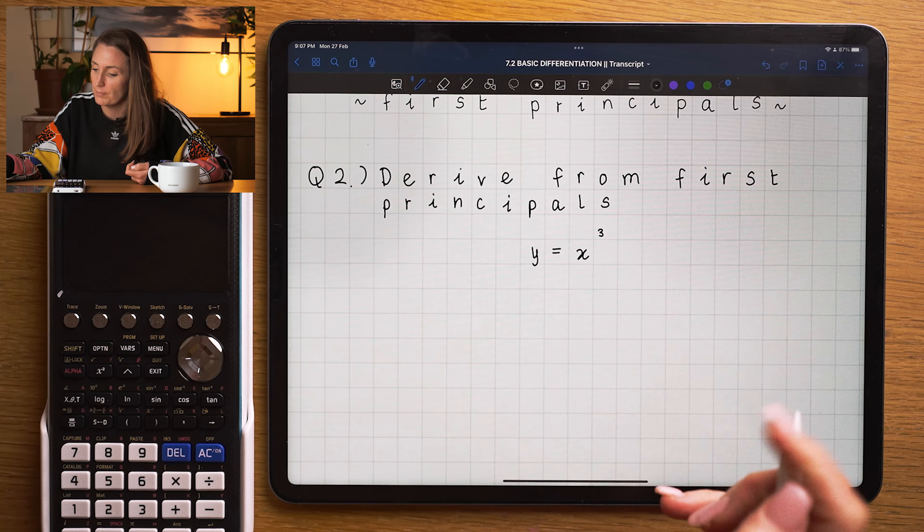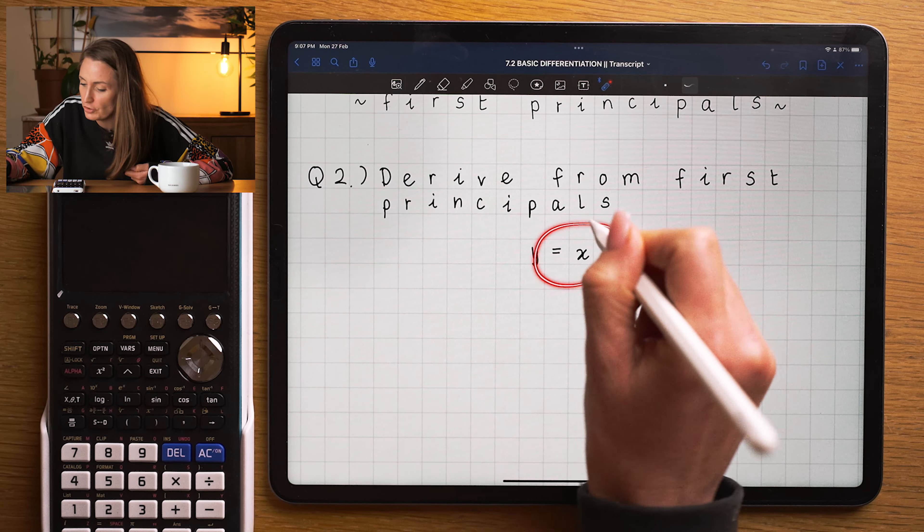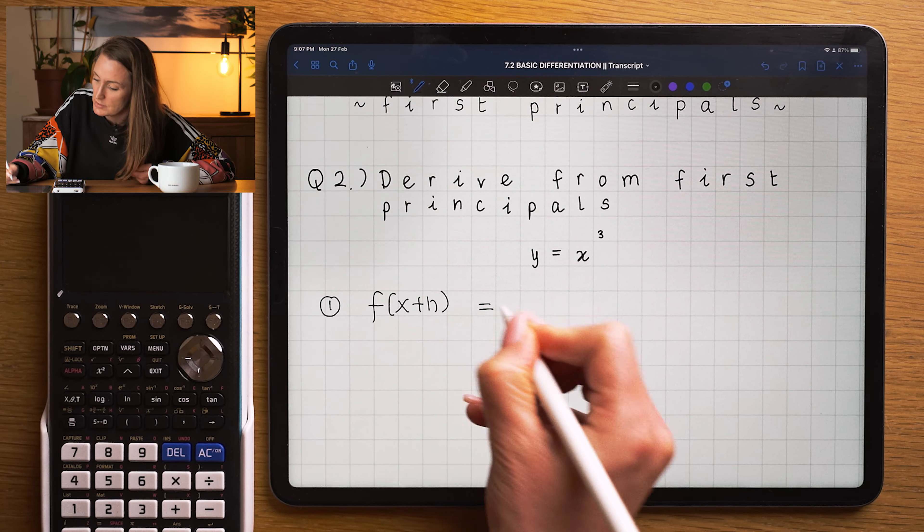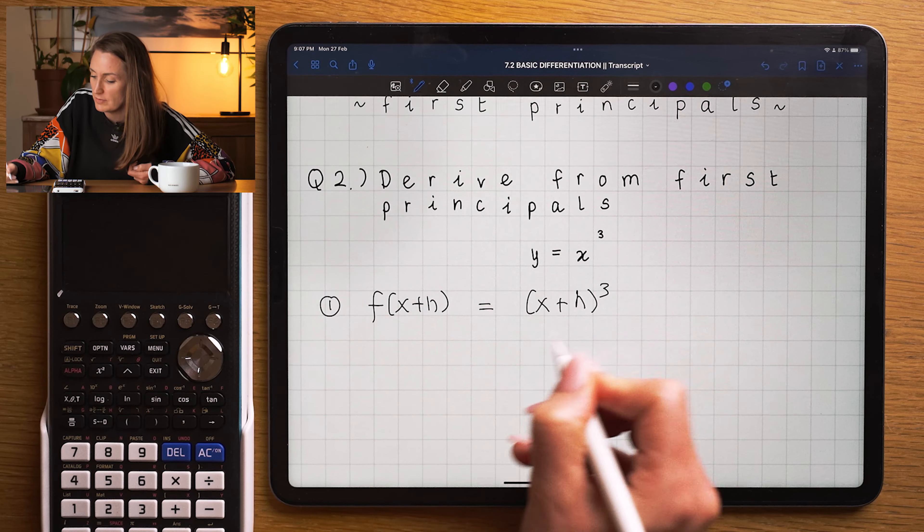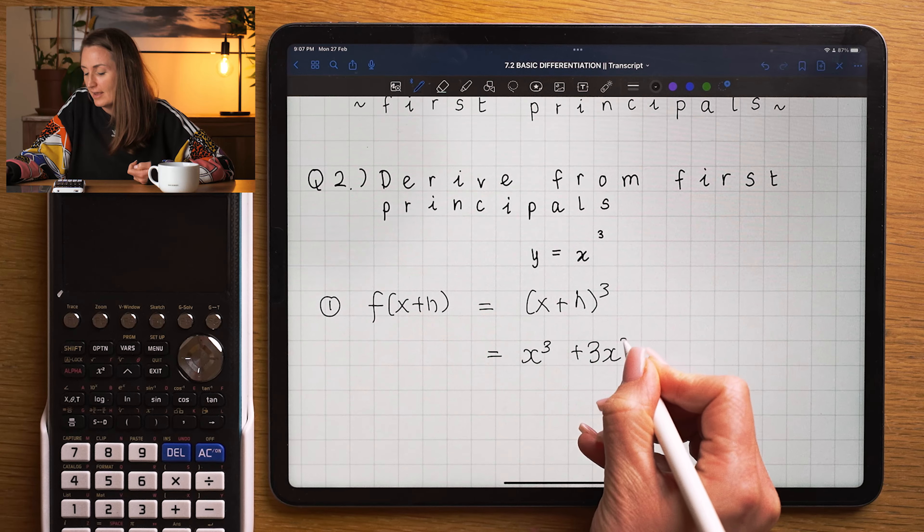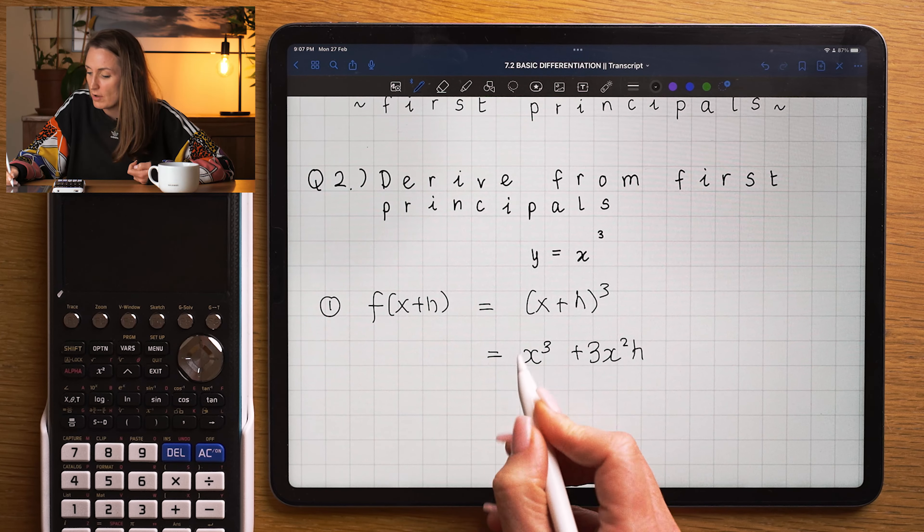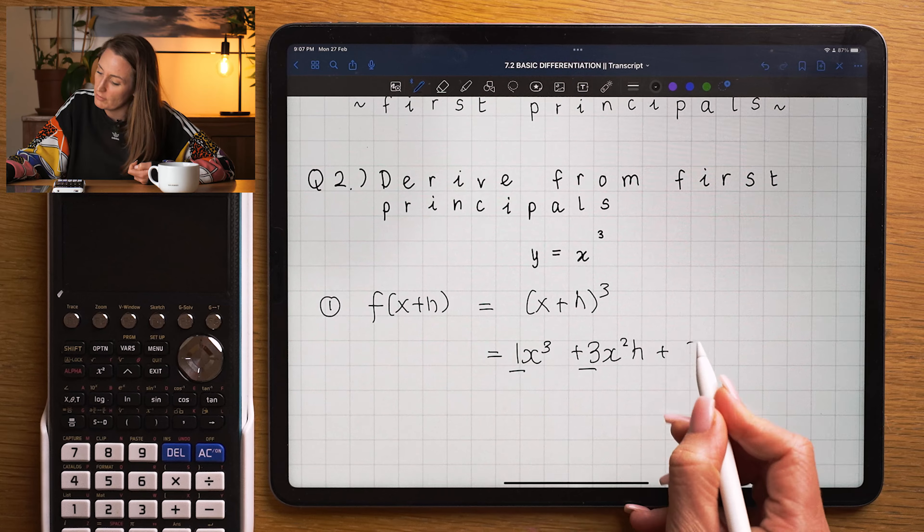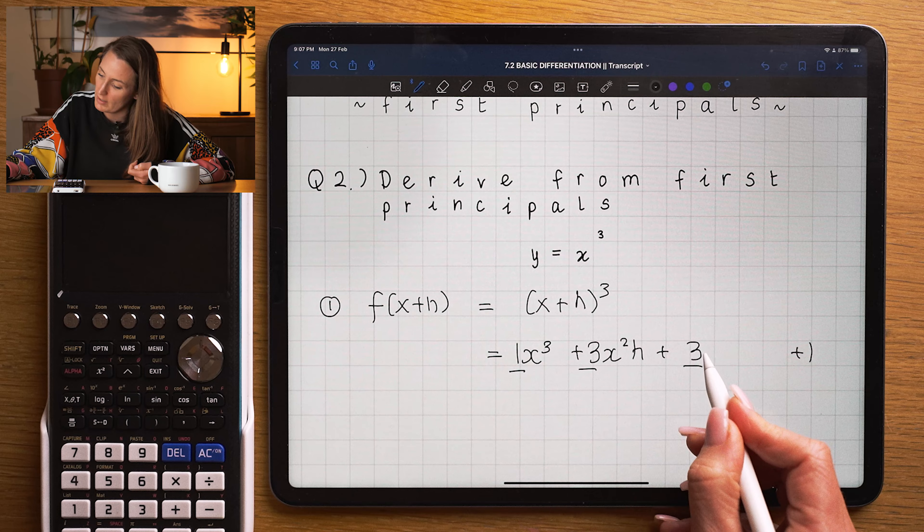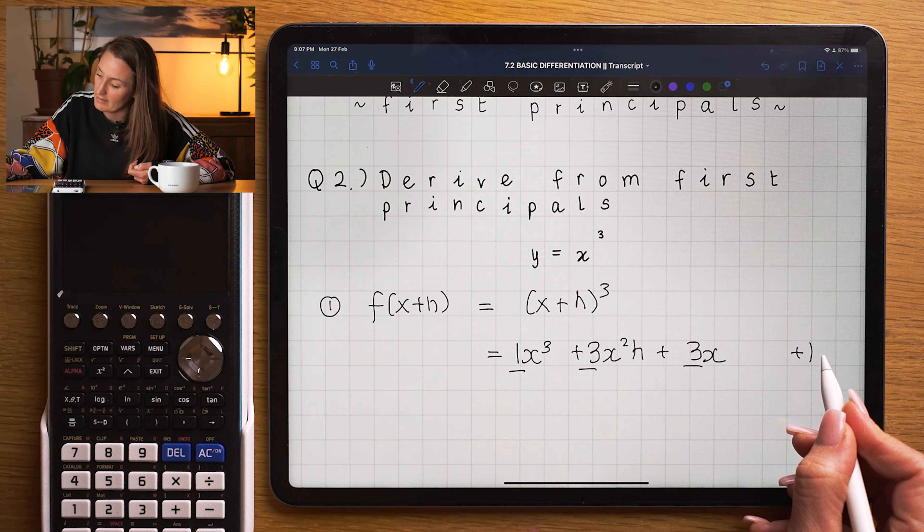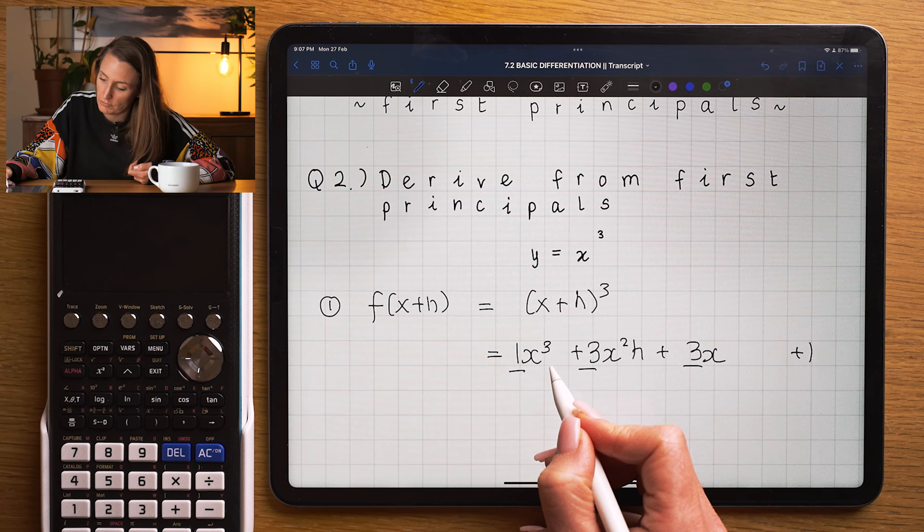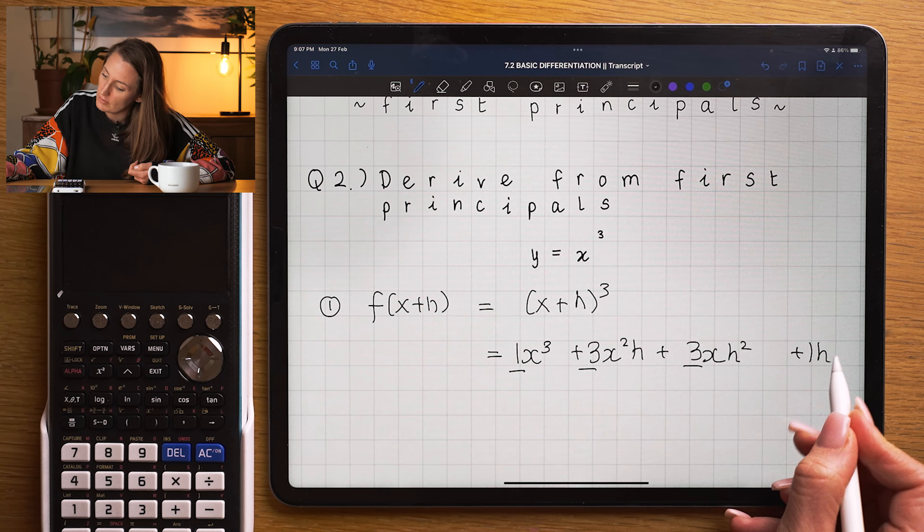Let's have a look at another example, pretty similar example, but now you've got cubed. So step one, you want to work out f of x plus h. So you need to work out x plus h cubed. And again, binomial expansion is your really good friend in this case here. So I know my binomial coefficients are 1, 3, 3, 1. I'm going to decrease my power of x, x cubed, x squared, x, that would be x0, so I'm not going to write it down. I'm going to increase my h's, h0, which is just 1, h1, h2, h3.